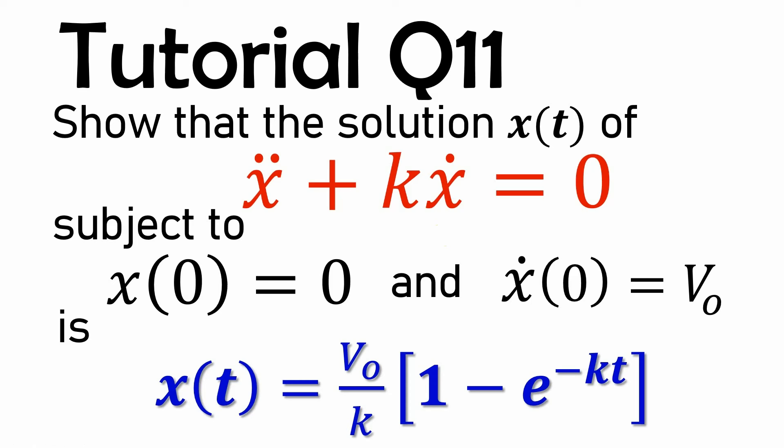To cut the story short, we have a second-order ordinary differential equation here, and we are to show that the solution is x(t) = (v₀/k)(1 − e^(−kt)).